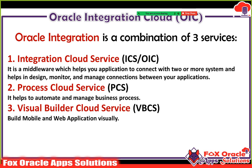OIC is a middleware application which helps us to connect two different applications. OIC helps us to communicate with on-premise applications as well as cloud applications. Process Cloud Services, known as PCS, helps us to automate and manage business processes. And the third, VBCS — Visual Builder Cloud Services — allows us to design mobile or web applications that can be attached to Oracle Cloud or Oracle Fusion applications.